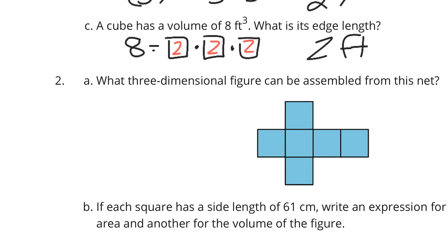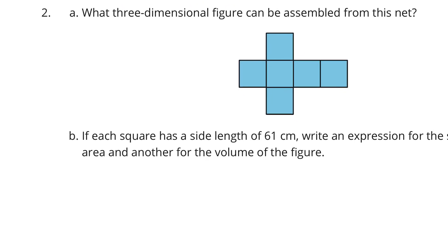Question number 2, what three-dimensional figure can be assembled from this net? Well, looks like a cube to me. All equal squares, and there's 6 of them, so that's a cube.